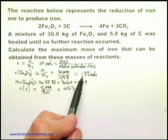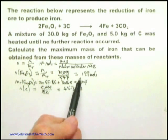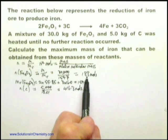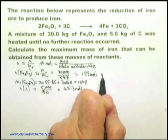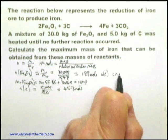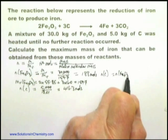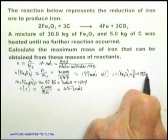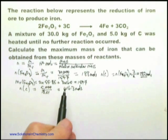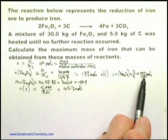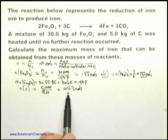Now we need to determine: are these the correct amounts of moles, or is one in excess? Looking at the Fe2O3 first — how much carbon do we need? The number of moles of carbon required equals the number of moles of Fe2O3 times 3 over 2, which equals 282 moles. You can immediately see that you only need 282 moles of carbon, but in fact you've got 416, so therefore the carbon is in excess.